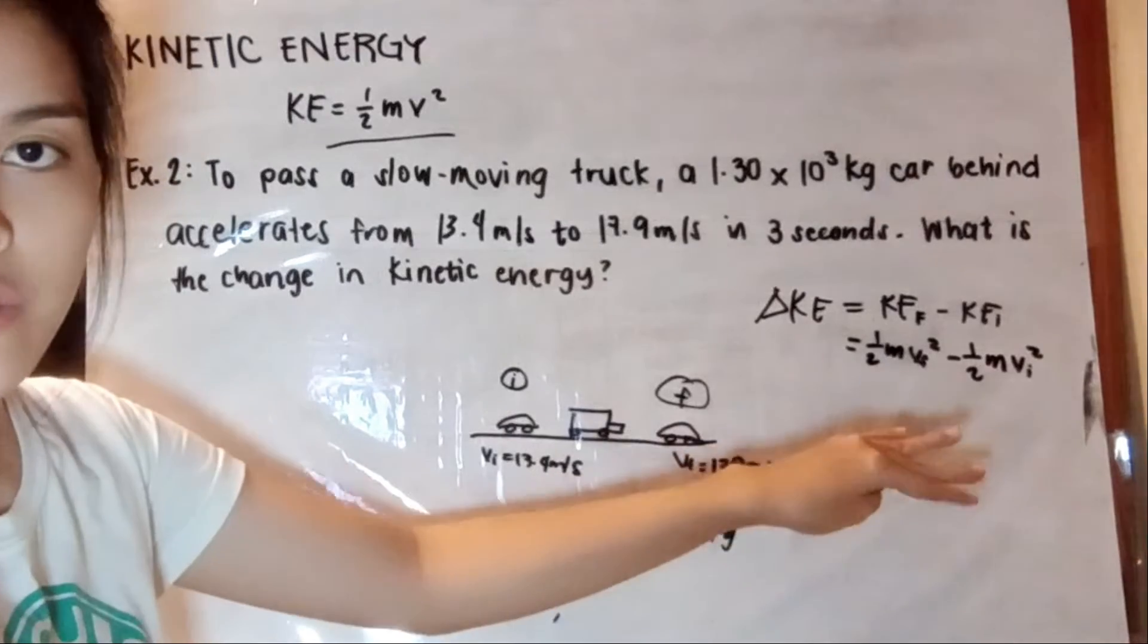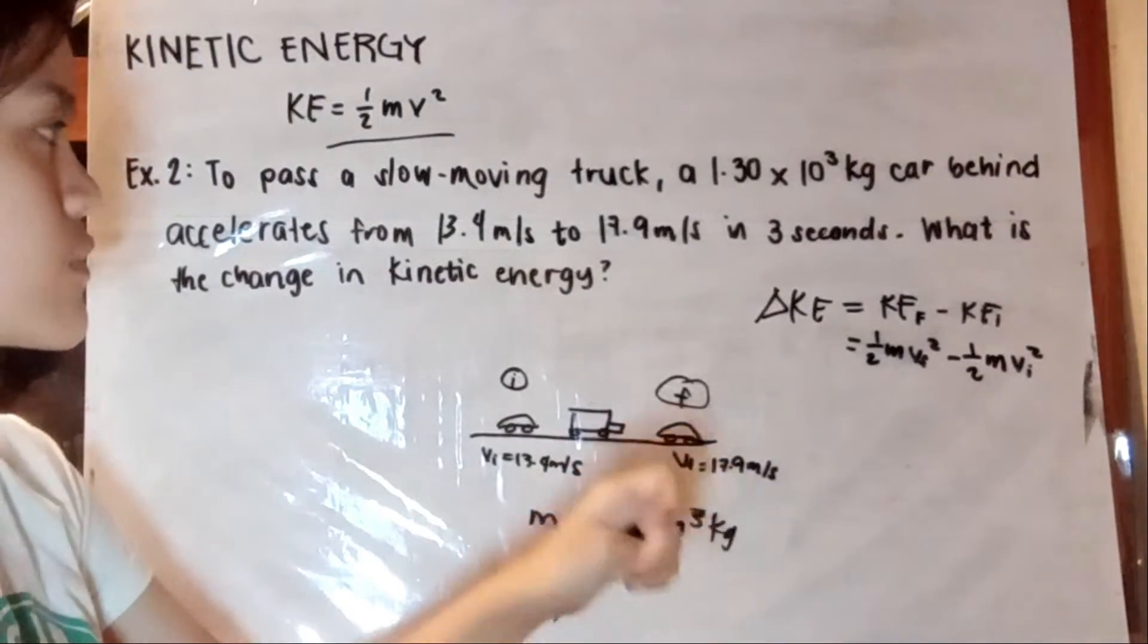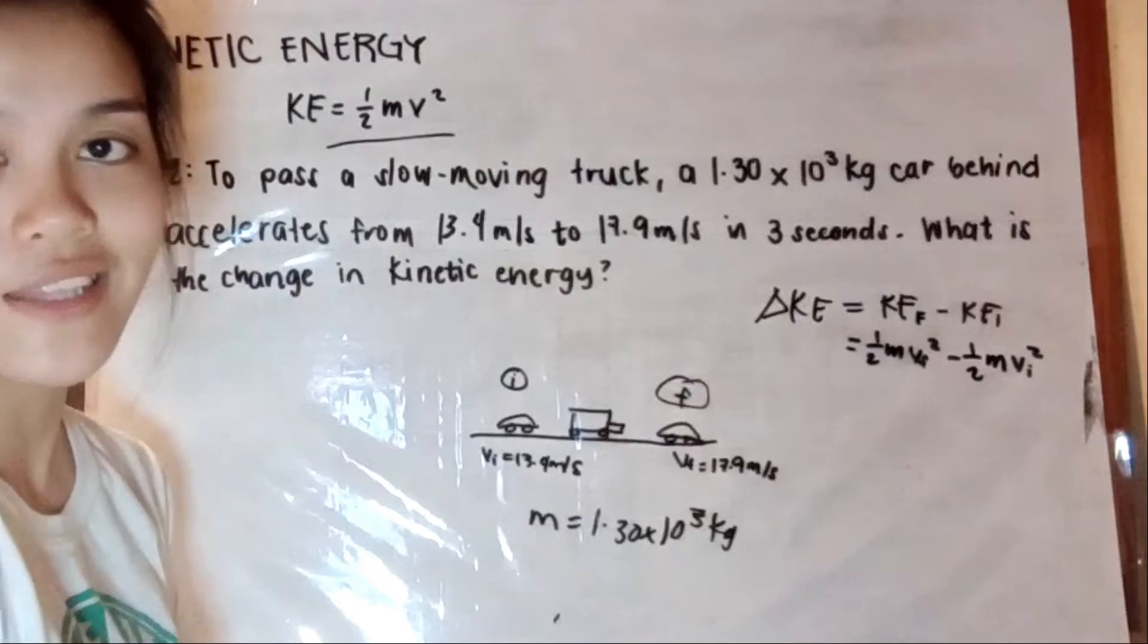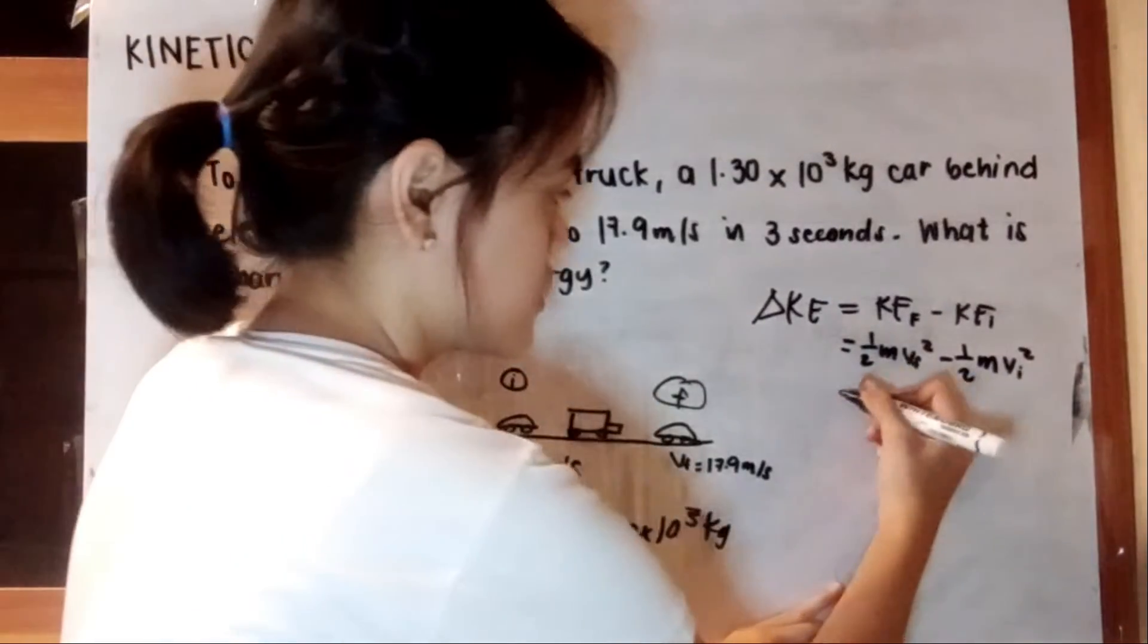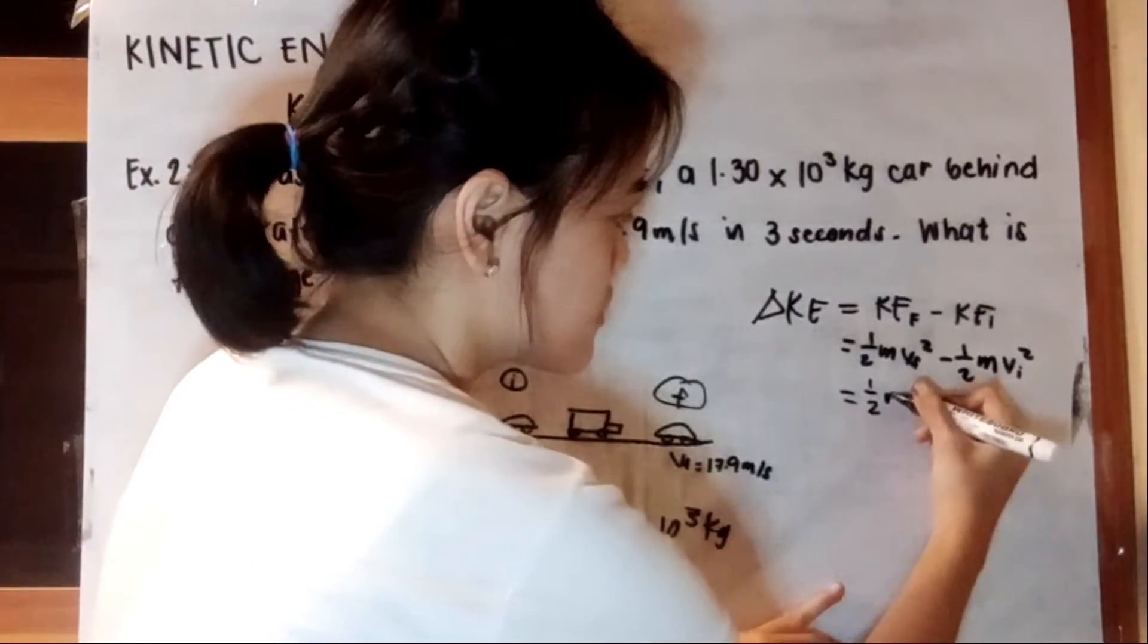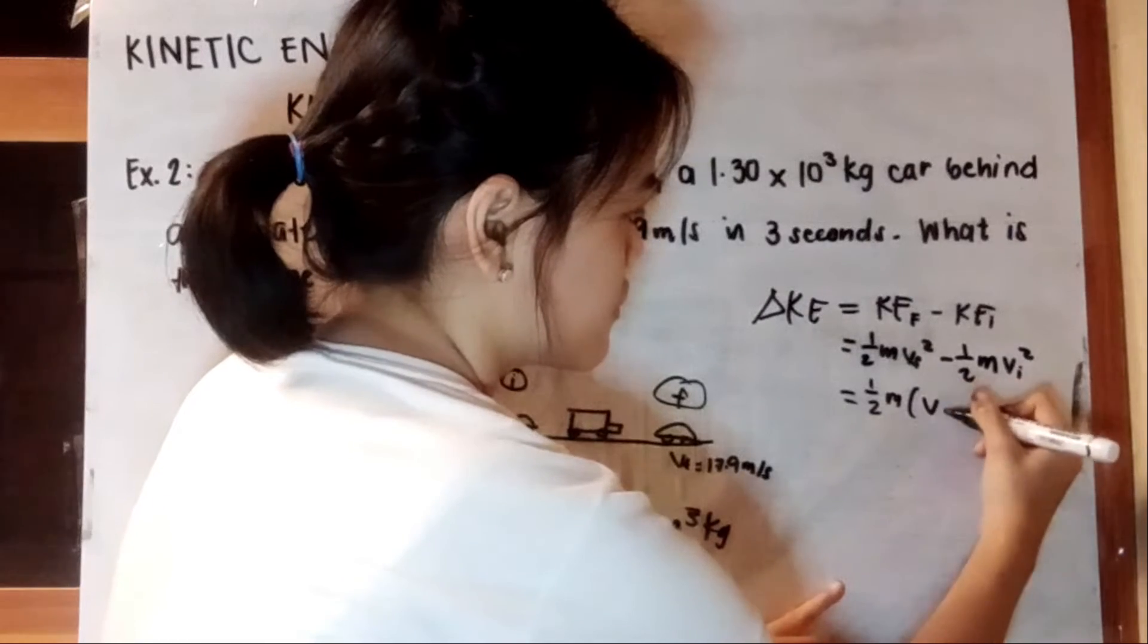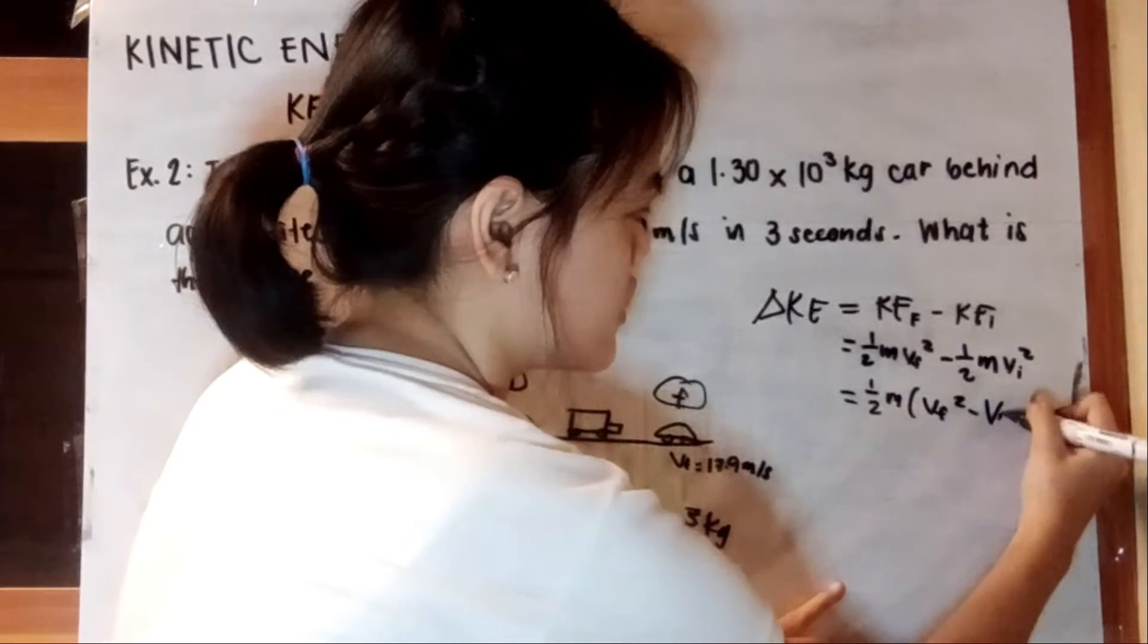So in this way, we can now solve for our change in kinetic energy. Let's just factor out the mass, and then we have v final squared minus v initial squared.